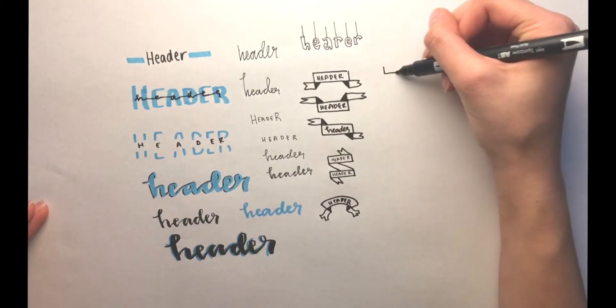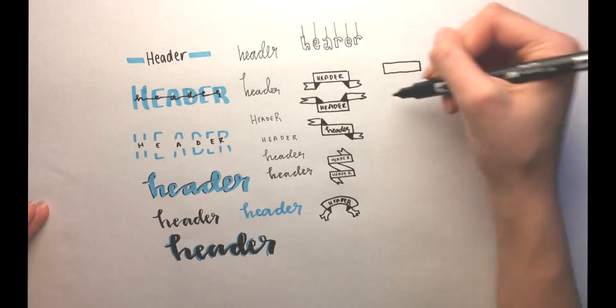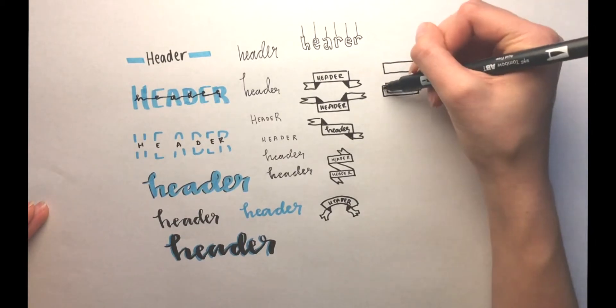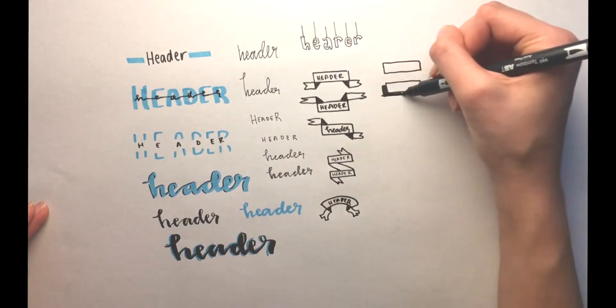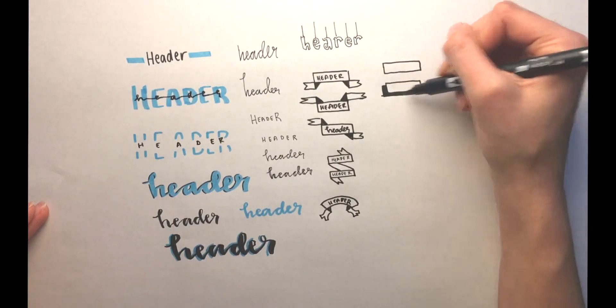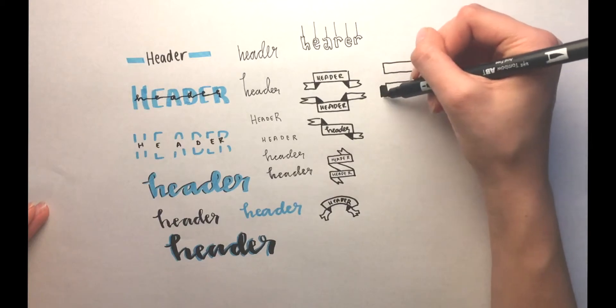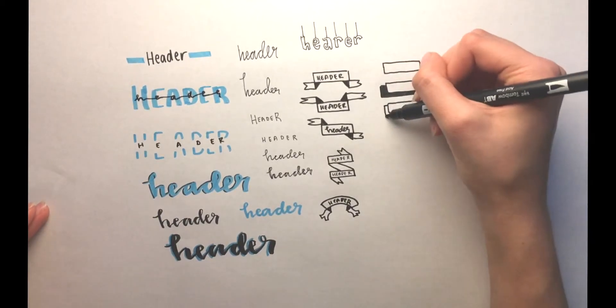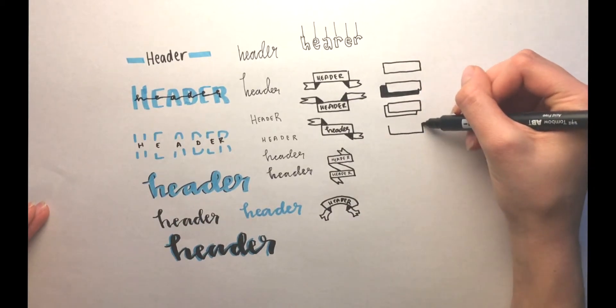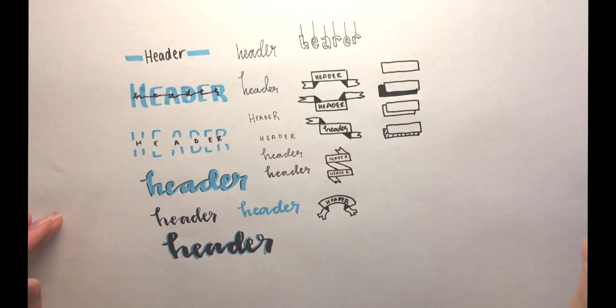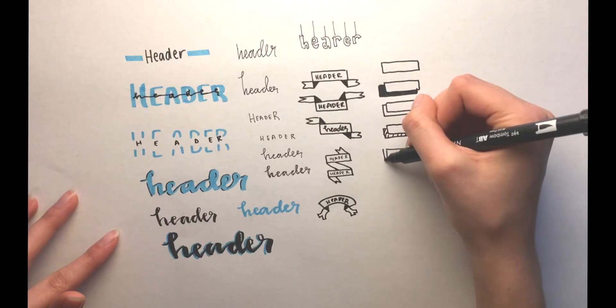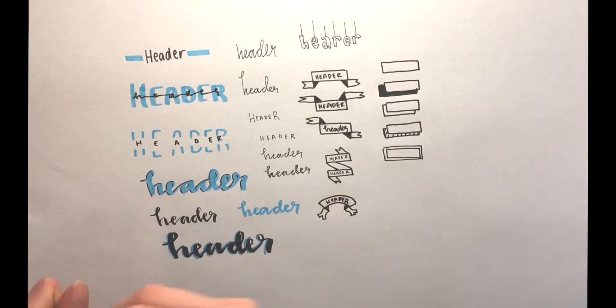So then I also went into other box ideas that you can box your headers with. So the first one is just a basic box. The second one is like a box with another drop shadow behind it, which kind of looks cool, gives it some effect. Then this third one is just two boxes, and this fourth one is like a box with lines through it for the second one. And then this last one is just two boxes inside of each other.